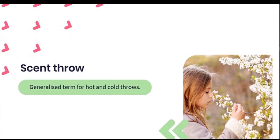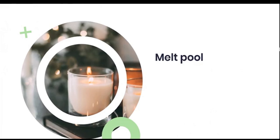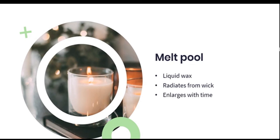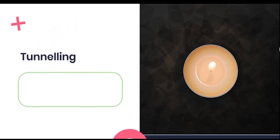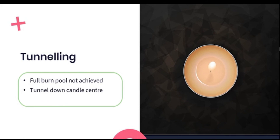The more generalized term of scent throw encompasses both hot and cold throws, and relates to the amount of scent given off by the candle and how widely it is distributed. The melt pool is the liquefied wax that radiates outward from the wick when a candle has begun to burn. The longer you burn your candle, the larger your melt pool will become, though dependent on your wick size, the melt pool should have finite boundaries. Tunneling is a phenomenon that occurs when a candle has been lit but not allowed the time to form a complete burn pool before being extinguished. It refers to the tunnel that forms when a candle burns straight down the center of the wax as opposed to burning evenly from top to bottom.